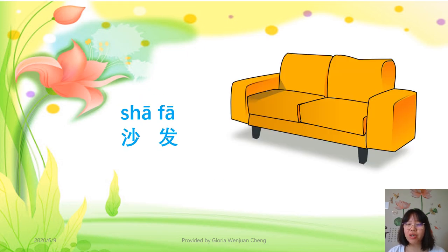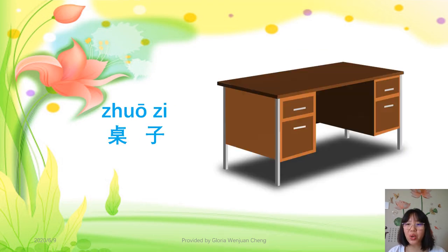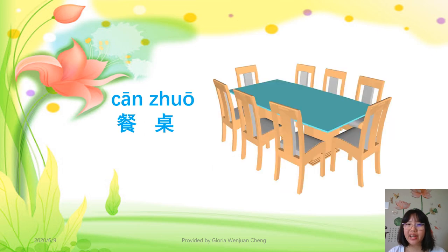沙发 — both first tone. 沙发 means sofa, similar pronunciation to English. 桌子 means table or desk — all kinds of table or desk. Here is 餐桌 — 餐 like 餐厅 means dining hall, so 餐桌 means dining table, both first tone.